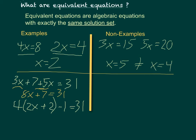Now, if I simplify the lower one, 4 times 2x is 8x, 4 times 2 is plus 8, and then minus 1 equals 31. So of course, this is also 8x plus 7 equals 31.